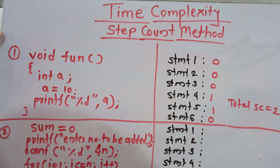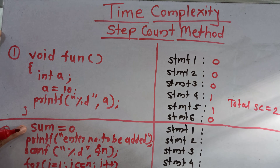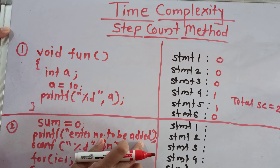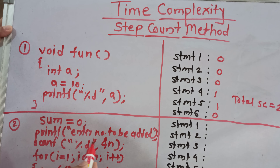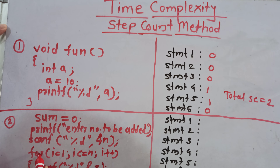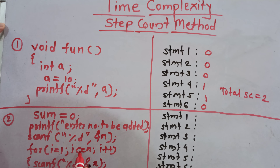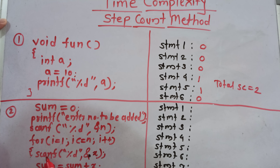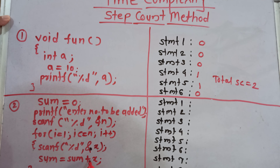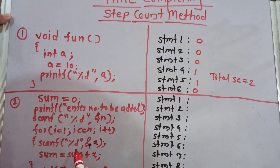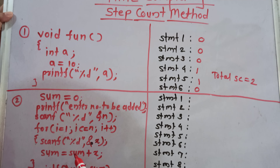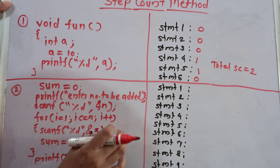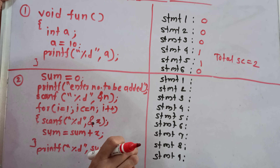Now we will see the second example. Here sum is equal to 0, then a printf statement to enter the number to be added, then scanf to scan the number n. Then there is a for loop: for i is equal to 1, i is less than or equal to n, i plus plus. Inside the for loop we have a scanf statement and sum is equal to sum plus x — meaning we accept numbers from the user and add them. Outside the for loop we print the sum. Now we will see how the frequency count is calculated for this algorithm.